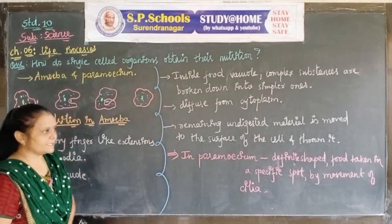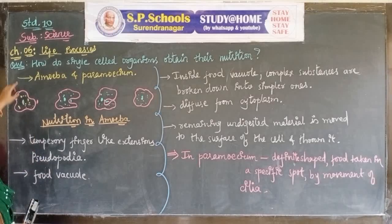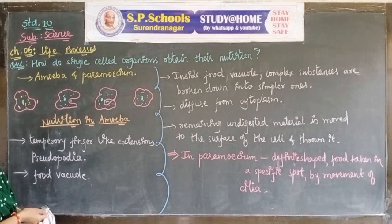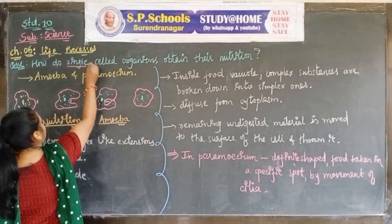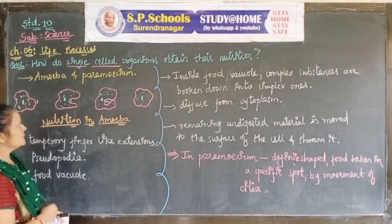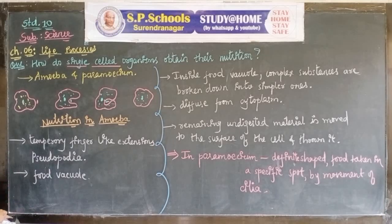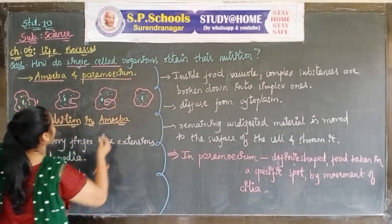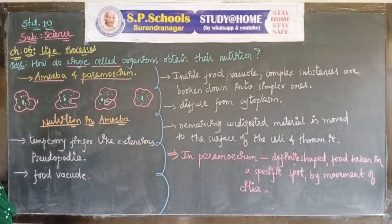Now let's see how single-cell organisms obtain their nutrition. The question is: how do single-cell organisms obtain their food? First we study single-cell and then multi-cell organisms. Examples of single-cell organisms are amoeba and paramecium. Here we take the example of amoeba.